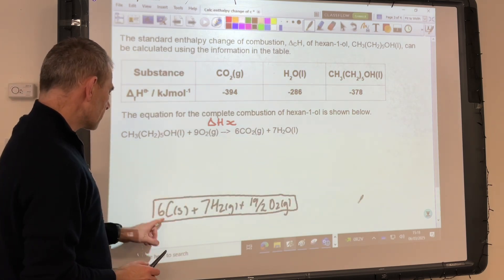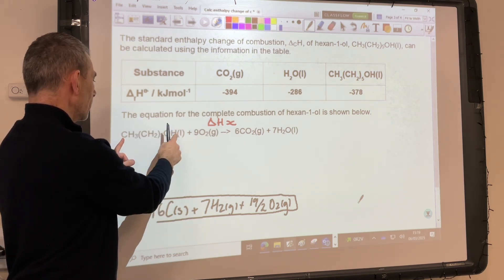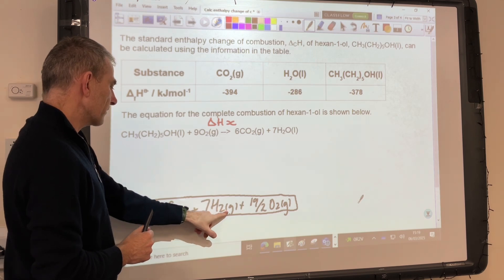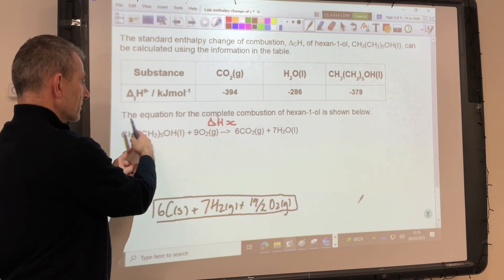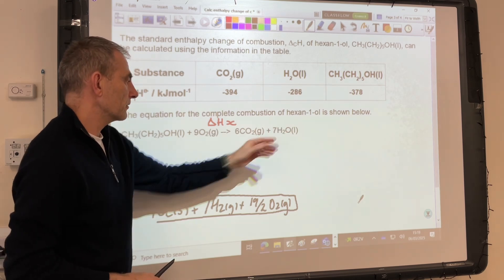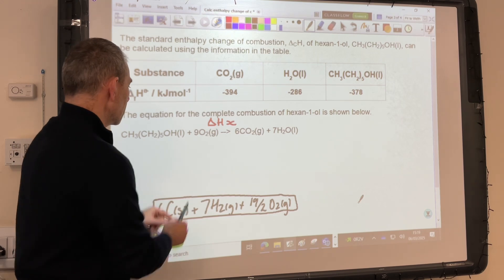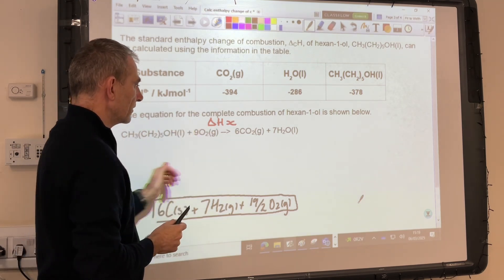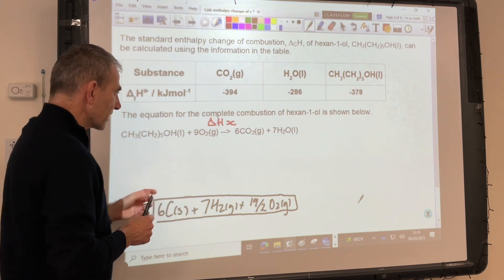So there's my element box. So I've got 6 moles of carbon solid because there are 6 moles of carbon on the left-hand side and on the right-hand side. 7 moles of H2 gas because there are 14 hydrogens here and there's 14 hydrogens on the right. And 19 over 2 moles of O2 gas because we've got 19 single oxygen atoms on the left and 19 on the right. So we'll create the cycle now.